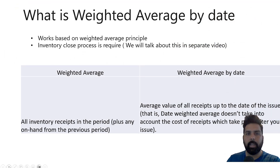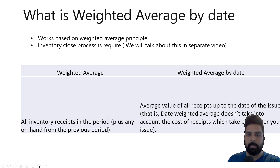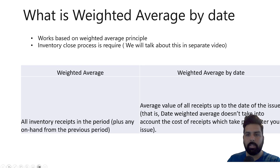If you talk about weighted average by date, this is a similar valuation method. The principle for calculating the weighted average cost for the product is similar to your weighted average. But there is a small difference between the weighted average and weighted average by date. The basic difference is that the average value for all the receipts up to the date of the issue — weighted average by date doesn't take into account the cost of receipts which take place after you issue. Whereas in the weighted average, it considers all the receipts in the period plus also the on-hand from the previous period, so it doesn't consider the date for calculating the weighted average cost for your issue.